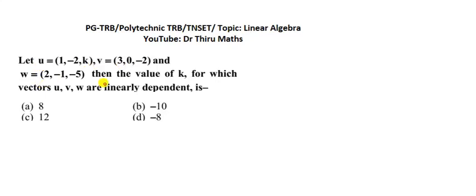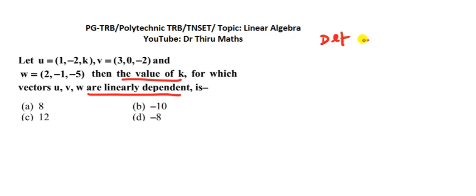Let u, v and w be vectors. The value of k for which the vectors u, v, w are linearly dependent is to be found. Given that u, v and w are linearly dependent, find the value of k.